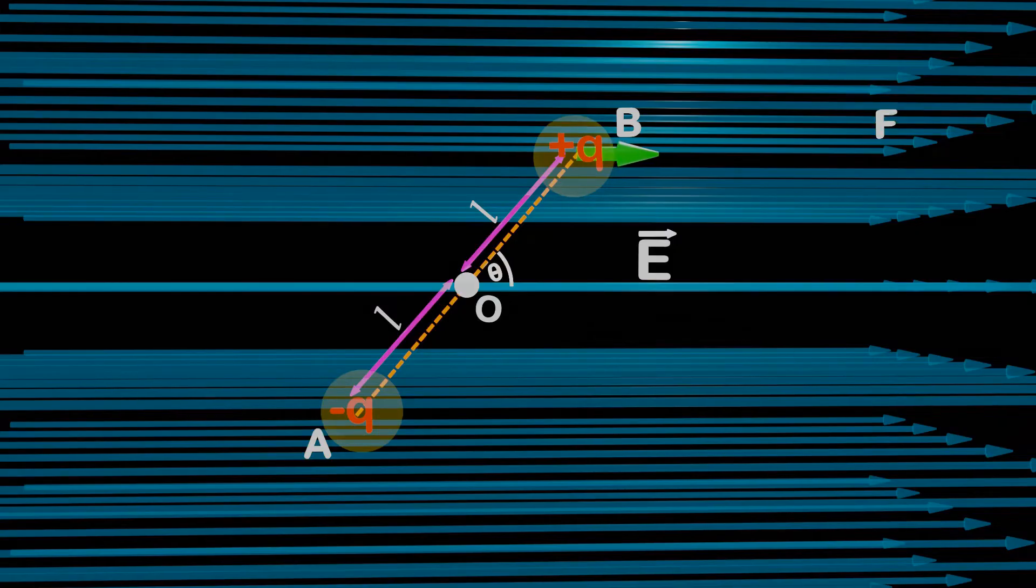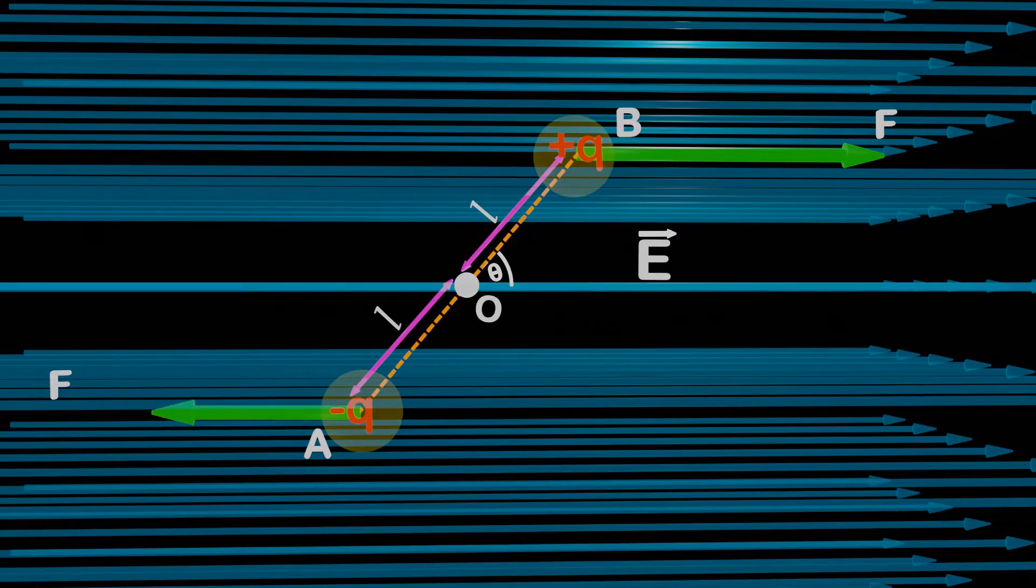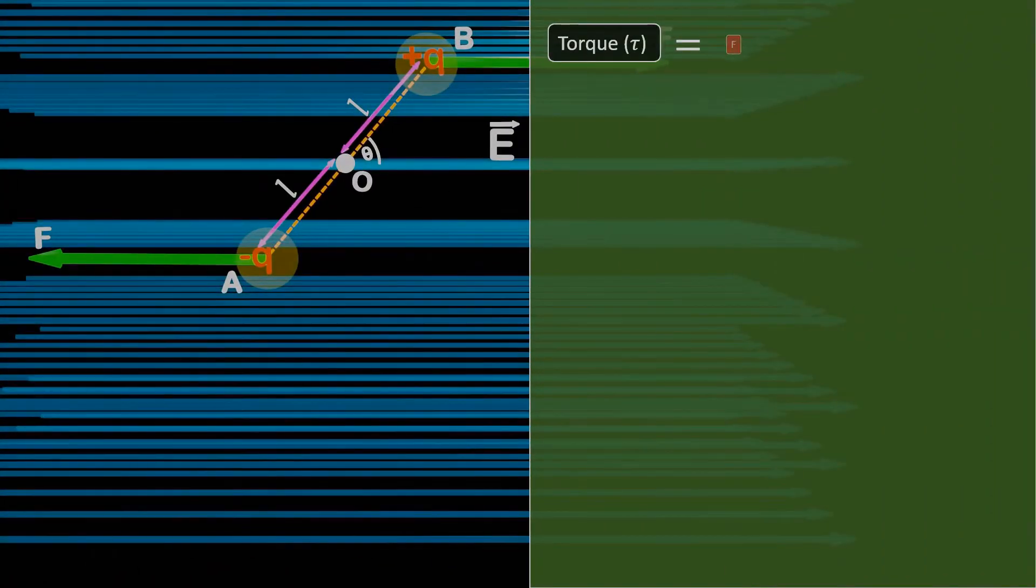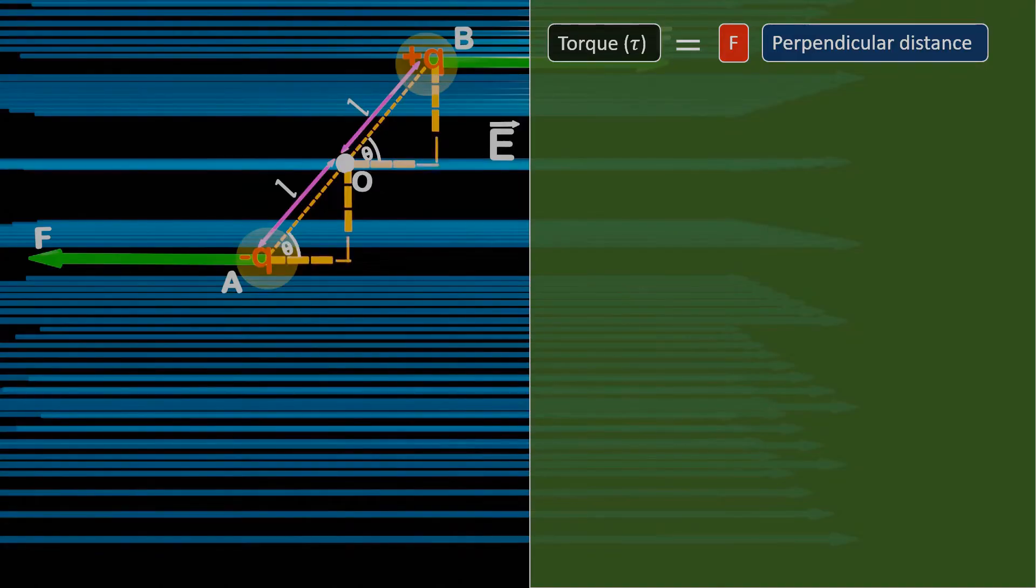We know that force acting on the positive charge will be along the direction of electric field, while for the negative charge, it will be opposite to the electric field. Apart from this, we also know that the torque is equal to the force multiplied by the perpendicular distance from the centre of rotation or pivot.